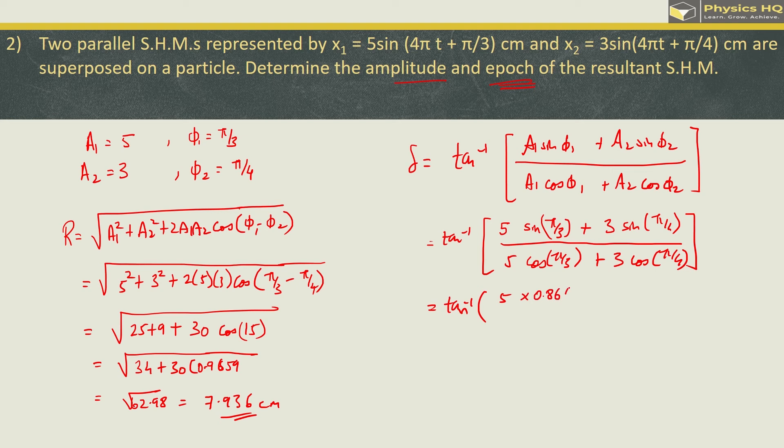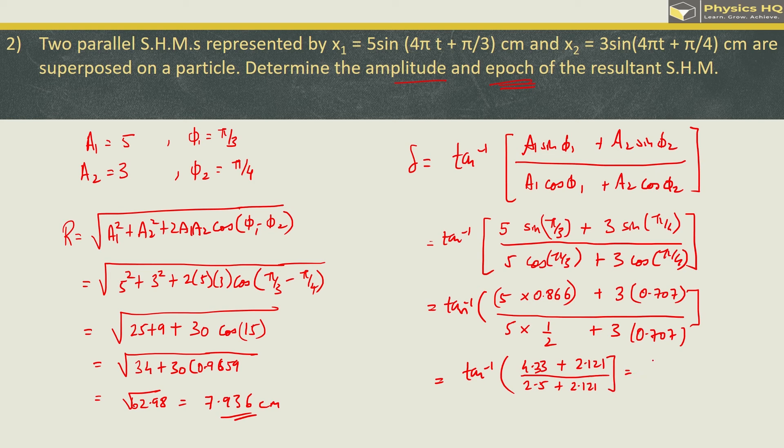So this is tan inverse 5 into sin 60 which is 0.866 plus 3 into sin 45 divided by 5 into cos 60 plus 3 times cos 45 which is 0.707. So this will be tan inverse 4.33 plus 2.121 divided by 2.5 plus 2.121 which is tan inverse 6.451 divided by 4.621 and tan inverse of 1.396 is 54 degrees and 23 minutes. Hope you all understood this, let us check out the next sum.